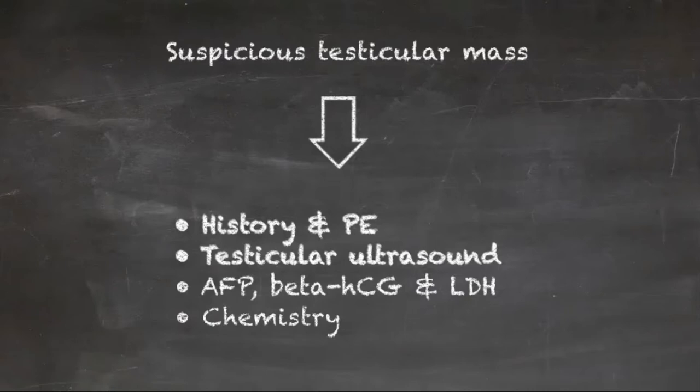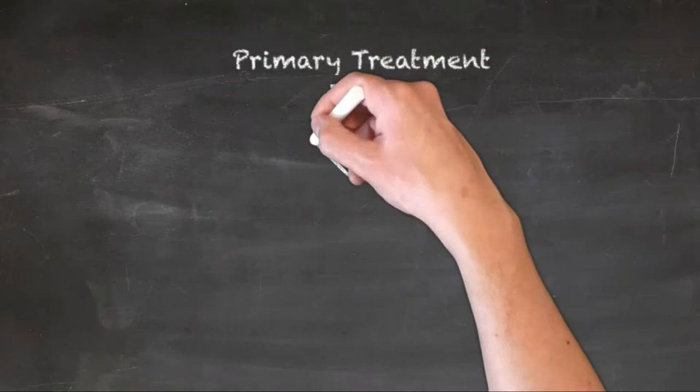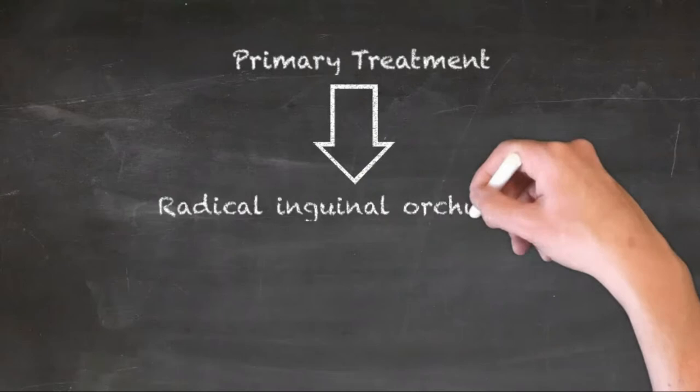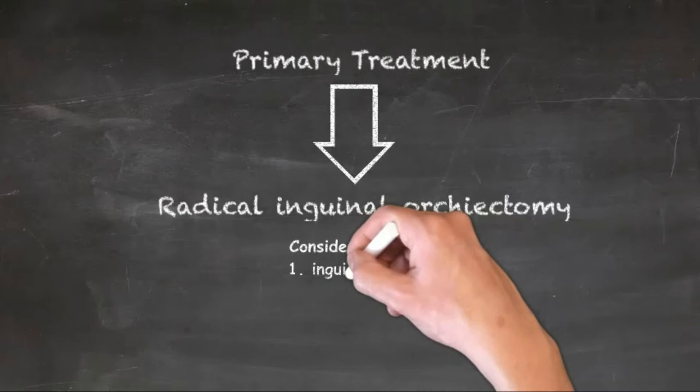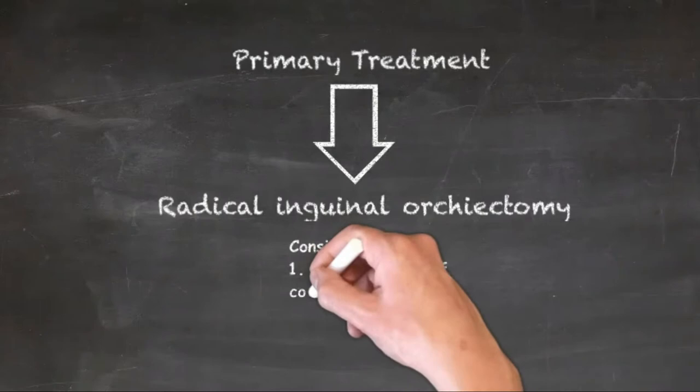Prior to definitive management, patients should be counseled about the risk of hypogonadism and infertility and should be offered sperm banking when appropriate. In patients without normal contralateral testes or with known subfertility, this should be considered prior to orchiectomy. Inguinal exploration and orchiectomy with en-bloc removal of testes, tunica albuginea, and spermatic cord is performed. If the diagnosis is not clear, a testicular biopsy is to be taken for histopathological frozen section.